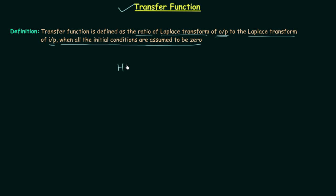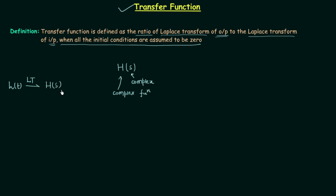The transfer function is represented by H(S). It is a complex function, and the variable S is also complex. The transfer function is easily obtained after taking the Laplace transform of the impulse response. H(T) is the impulse response, and after taking the Laplace transform of the impulse response you will have the transfer function of the LTI system. When you take the inverse Laplace transform of the transfer function you will have the impulse response.